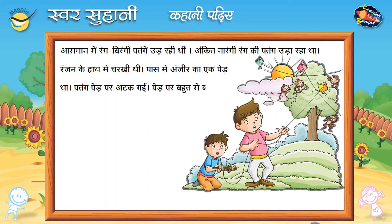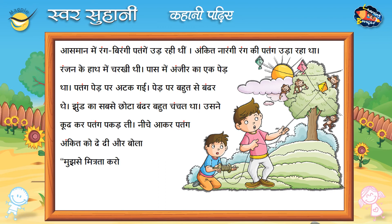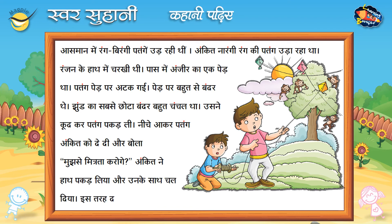पतंग पेड़ पर अटक गई। पेड़ पर बहुत से बंदर थे। झुंड का सबसे छोटा बंदर बहुत चंचल था। उसने कूद कर पतंग पकड़ ली। नीचे आकर पतंग अंकित को दे दी और बोला, 'मुझसे मित्रता करोगे?' अंकित ने हाथ पकड़ लिया और उनके साथ चल दिया। इस तरह दोनों में अच्छी मित्रता हो गई। उस दिन से वे दोनों अच्छे मित्र हैं।